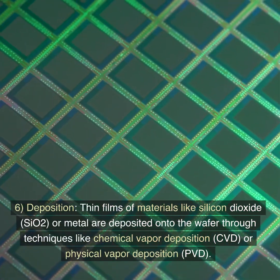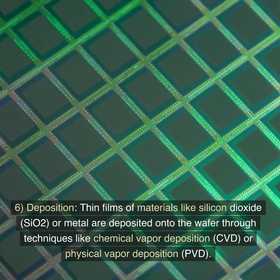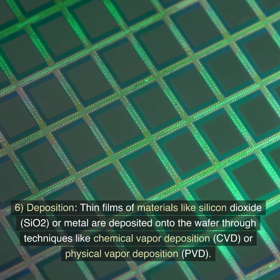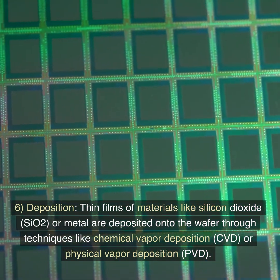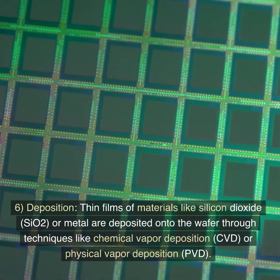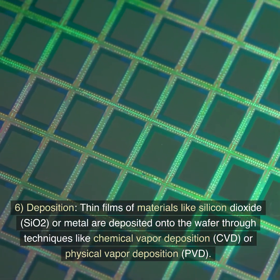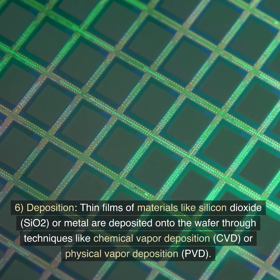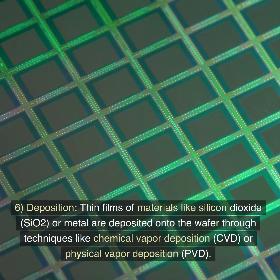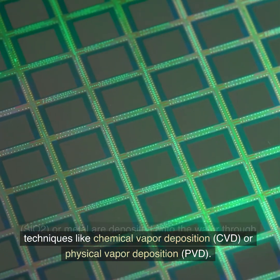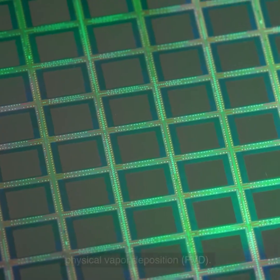Step 6: Deposition. Thin films of materials like silicon dioxide (SiO2) or metal are deposited onto the wafer through techniques like chemical vapor deposition (CVD) or physical vapor deposition (PVD). These films serve as insulators, conductors, or other functional layers.